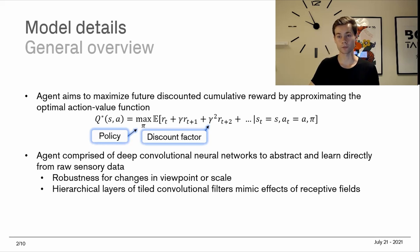The high level overview of reinforcement learning: the agent aims to maximize future discounted cumulative reward. This is done by approximating the optimal action value function. For anyone familiar with reinforcement learning concepts, this is nothing new. We have a Q value function or action value function. It tells us how good it is to be in state S and take action A.